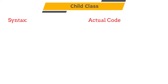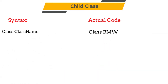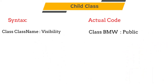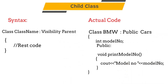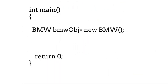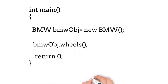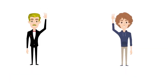Now let's see the syntax. First we define a class Cars with the wheels method. When defining a child class, we tell the compiler it's a child class using: class BMW followed by a colon, then the visibility modifier (public or private), then the name of the parent class. The rest of the class — member variables like model number and functions like printModelNumber — stays as usual. If we call the wheels method using a BMW object in main, we get output 'cars has four wheels,' reusing the parent class code.